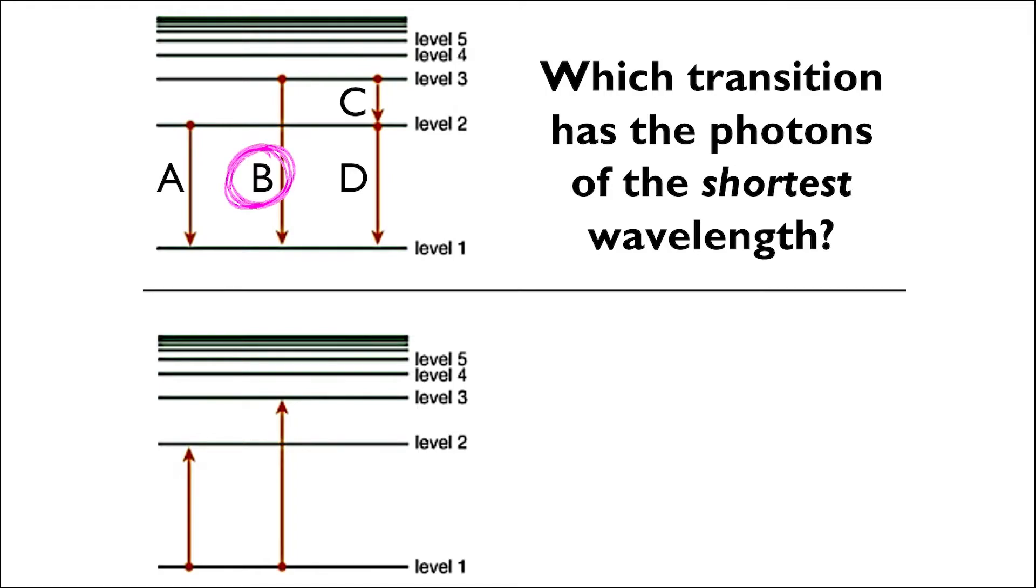Now what about the transition that has the photons of the longest wavelength instead? Here we look for a transition that's as small as possible, since the smaller the jump, the lower the amount of energy associated with it. And the lower the energy, the longer the wavelength of that photon. So here, the answer is C.